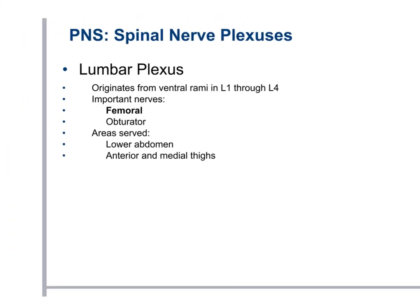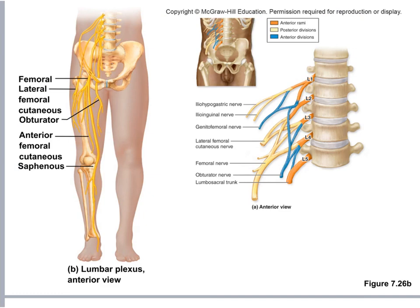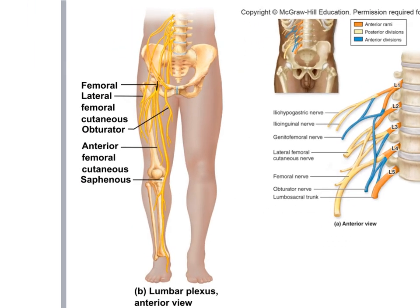The lumbar plexus originates from L1 through L4. The femoral nerve goes down the front of the leg and the obturator nerve runs through the obturator foramen in the hip. Together they serve the lower abdomen and the anterior and medial thigh — not the back. Sciatic pain goes down the back of the leg, not the front.